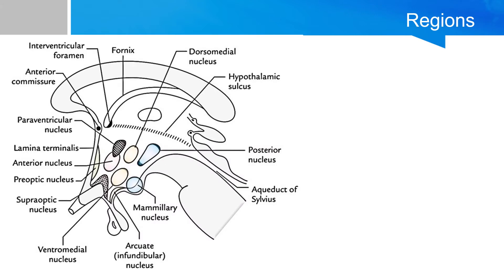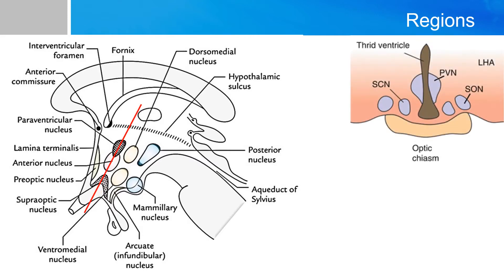The hypothalamus can be subdivided into three major regions. The first is called the supraoptic region, meaning that it is above the optic chiasm. If you draw a coronal line through this plane, you get a bunch of nuclei that sit above the chiasm: the supraoptic nucleus, the anterior nucleus, the paraventricular nucleus, and the suprachiasmatic nucleus.